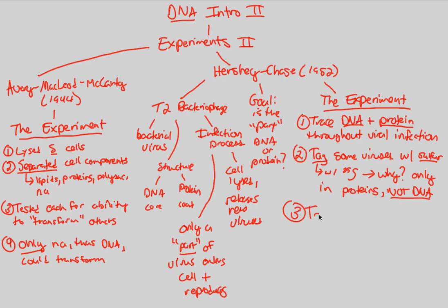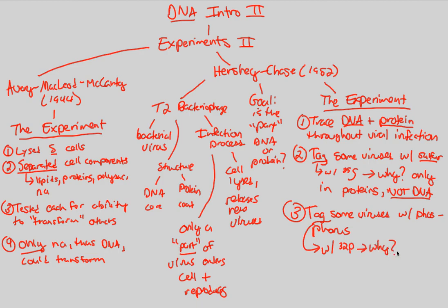They also tagged some viruses with phosphorus — specifically 32P, radioactive phosphorus. You have to ask yourself why. This is because phosphorus is only in DNA, not in proteins. So to find out whether it's DNA or protein that enters the cell and reproduces and lyses and releases, you use two distinct items — sulfur and phosphorus — found only in proteins and only in DNA respectively, and then figure out the results.